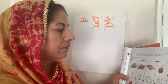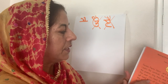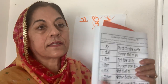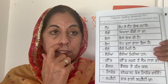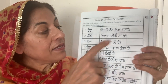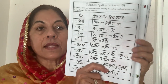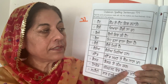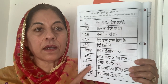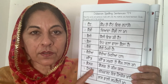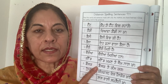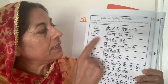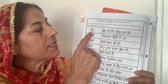Now I am going to teach you the sentences. A good thing about this book is that in every lesson, we only use the letters and matras we have learned so far. None of these letters or matras are ones you don't already know, so these sentences and words are easy to read. All you need is practice reading them.